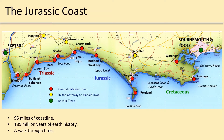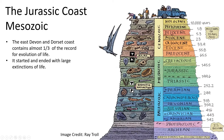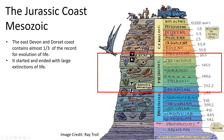The Jurassic Coast extends from Exmouth in East Devon to Old Harry Rocks on the Isle of Purbeck in Dorset — that is 95 miles of coastline and 185 million years of Earth history. Today we are roughly halfway along this coast at Hive Beach, Burton Bradstock, not far from Bridport and West Bay. The Jurassic Coast contains rocks from the Mesozoic era, which includes the Triassic, the Jurassic and the Cretaceous periods. This Mesozoic coastline contains almost one-third of the record of evolution of life on our planet, and the Mesozoic era started and ended with large extinctions of life.